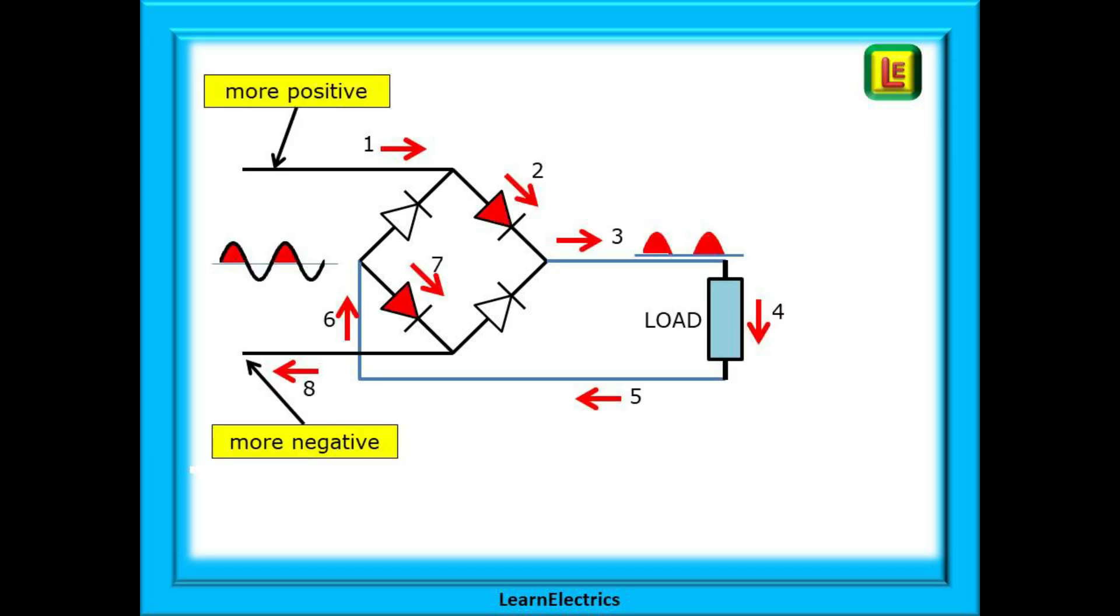Let's look at how the bridge rectifier works. Follow the numbered arrows shown in red. At the AC input number one is the more positive lead and so current flows through the diode at number two. This now appears across the load but only as half cycles. The current passes through the load at four returning to the bridge by way of arrows five and six and it then goes through the diode at arrow number seven and back to the transformer along arrow eight.